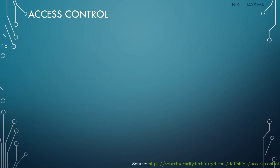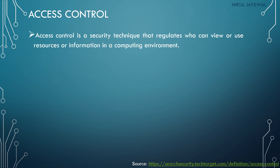Access control is a procedure to provide access to certain users. It defines which type of information or resources can be accessed by which type of user. The access control mechanism provides authentication — identifying authentic users and differentiating them from unauthenticated users — and authorization, meaning access to information is given to authorized persons only. Access control is a security technique that regulates who can view or use resources in a computing environment.